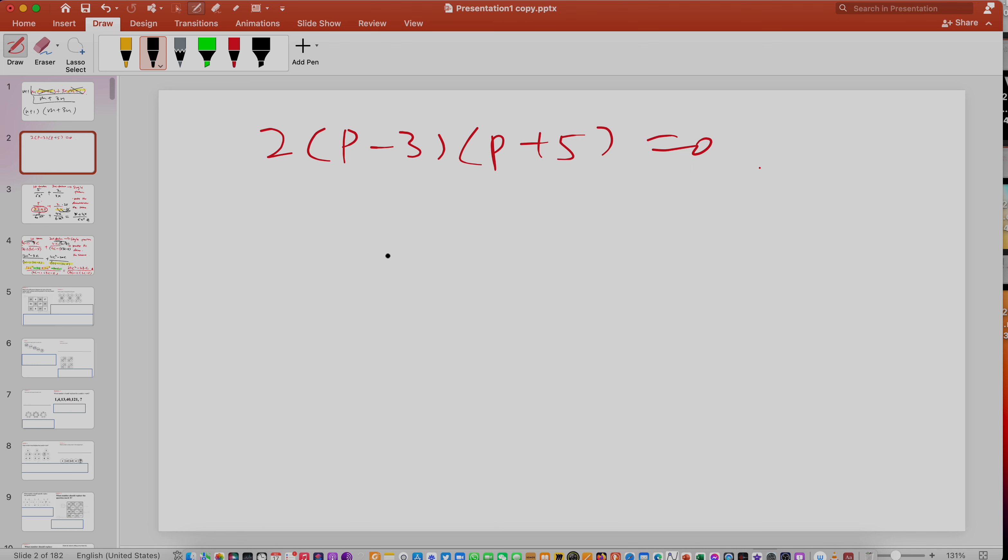Okay, so the structure of this question is this. You have two times the first bracket times the second bracket equals to zero. Right? Am I right or not? Right or not?